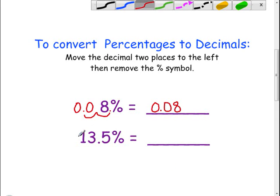In this case we have a whole number. And it's just as simple when you have a whole number. You move the decimal two places to the left, fill in any empty spaces with a zero, and then you can write out your decimal. 0.135. Very simple process.